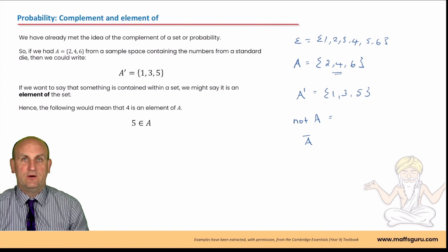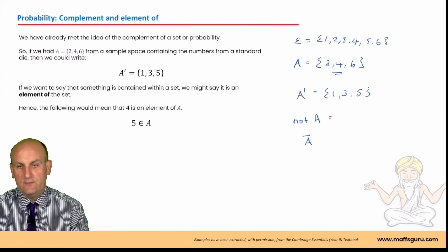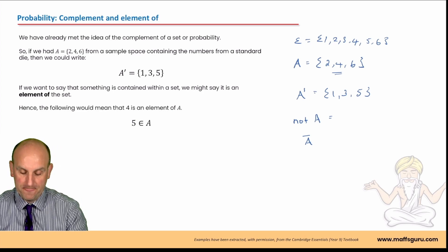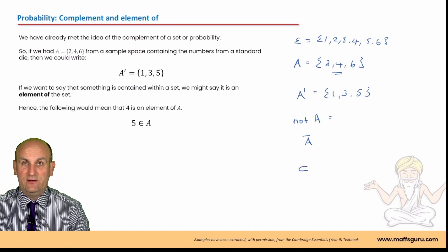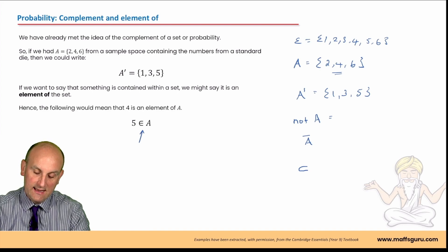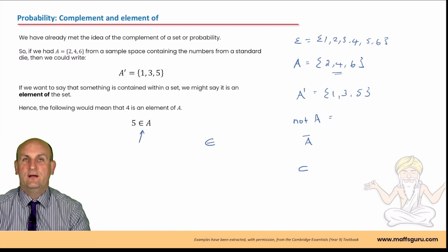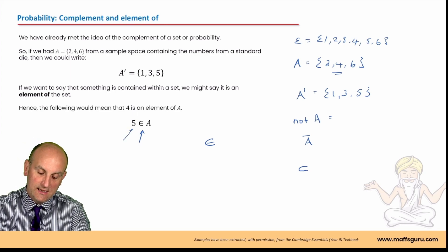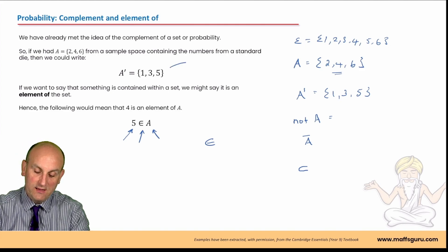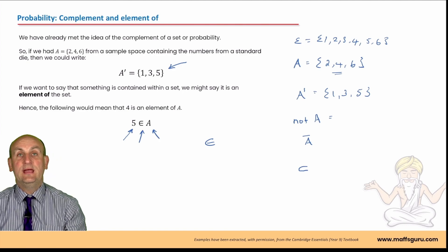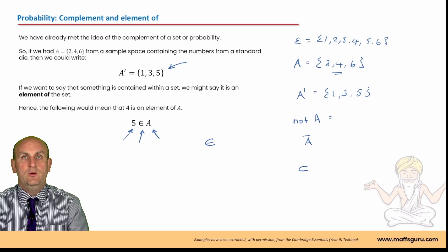The complement is the opposite of - so if it's raining then 'not raining' is its complement. The next concept is elements. The 'contained within' symbol looks like a C; an element symbol looks like an E - like a paper clip with a line coming out of it. In this situation it would say that the number five is an element of A. An element basically means one number - it means five is contained within that set A. You can download these notes from mathsguru.com.